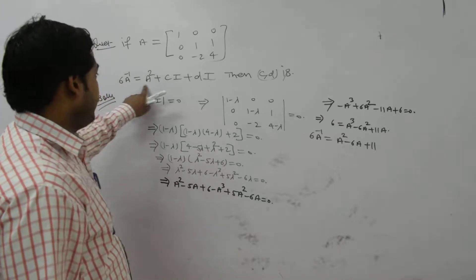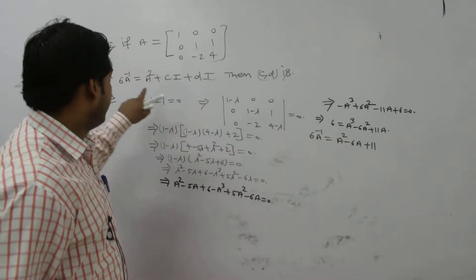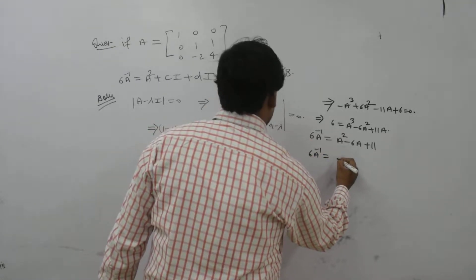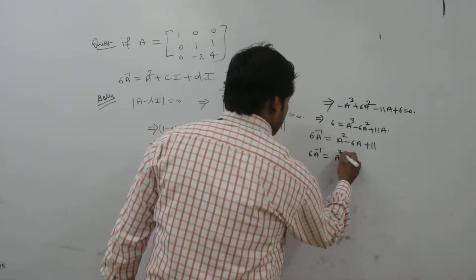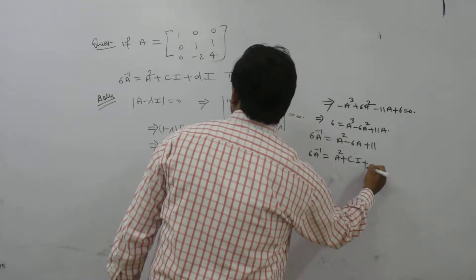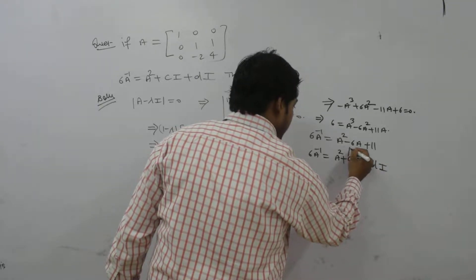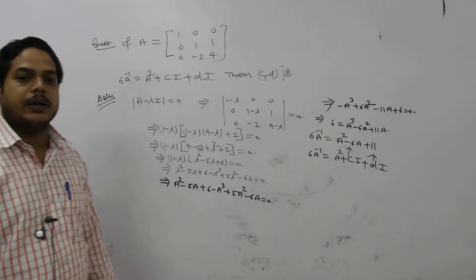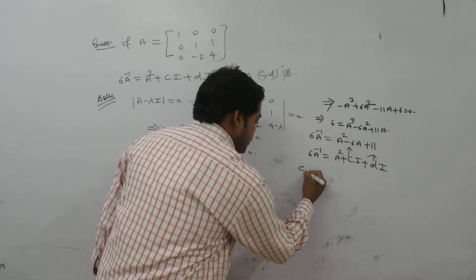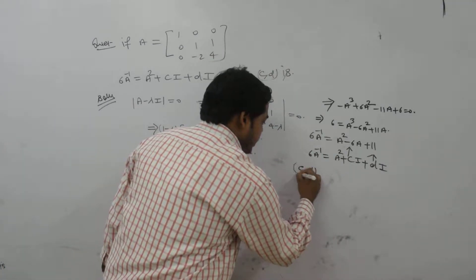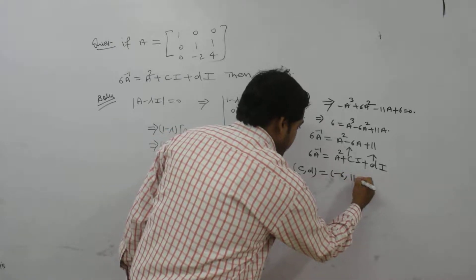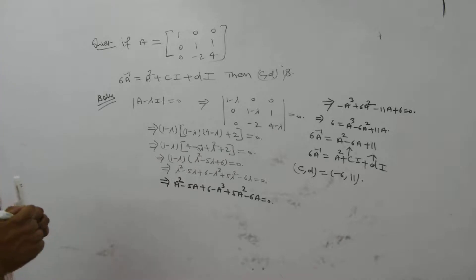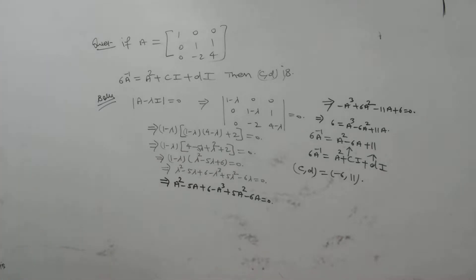Comparing this result with the given expression 6A⁻¹ = A² + CA + DI, we find the value of C is −6 and the value of D is 11. So the values of C and D are −6 and 11 respectively. This is a very simple question.